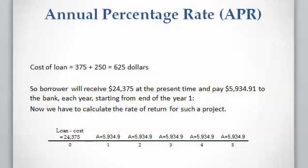In the next step we have to deduct the loan cost of six hundred twenty-five dollars from the original loan amount of twenty-five thousand dollars. So we are actually going to receive twenty-four thousand three hundred seventy-five dollars at the present time, but we still have to pay five thousand nine hundred thirty-five dollars per year.